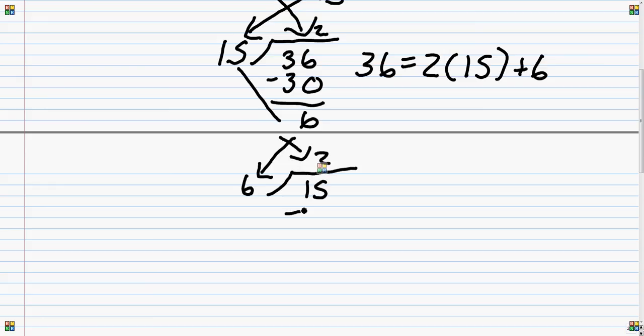15 goes into it twice, minus 12, the remainder is 3. So you can write it out again if you want. 15 is 2 times 6 plus 3.